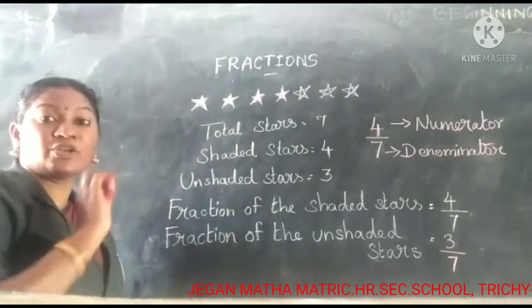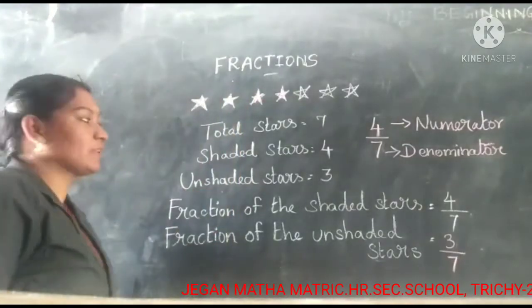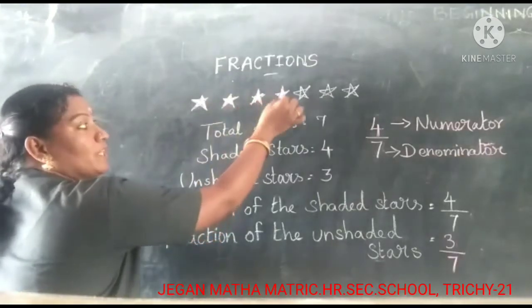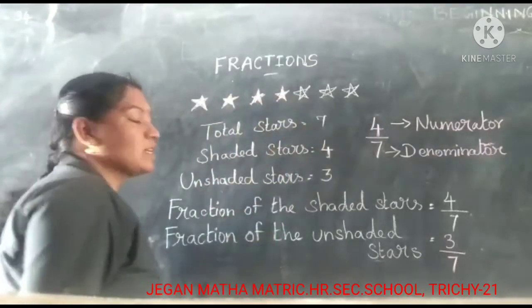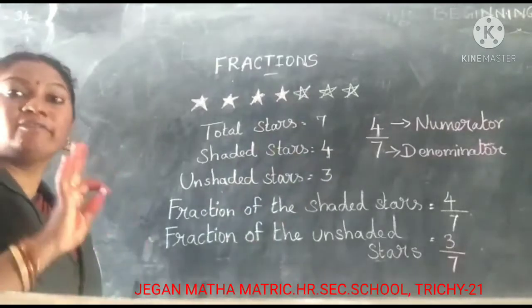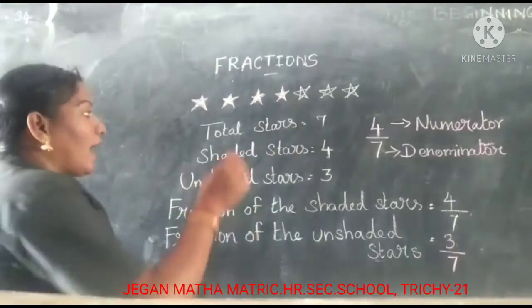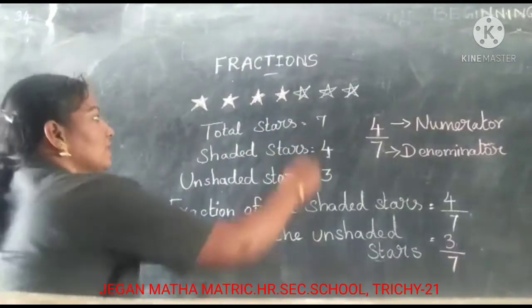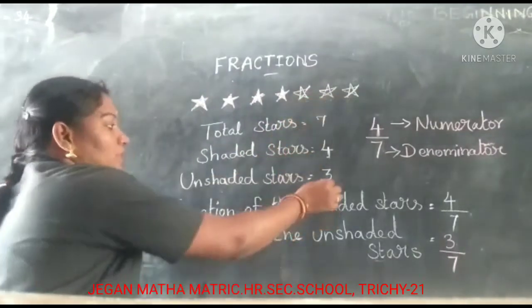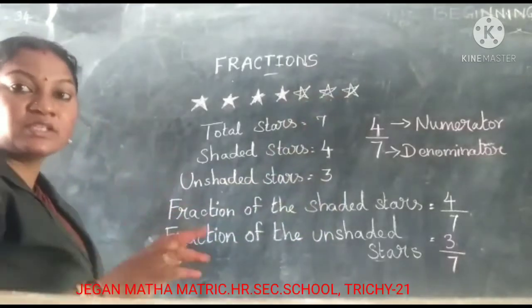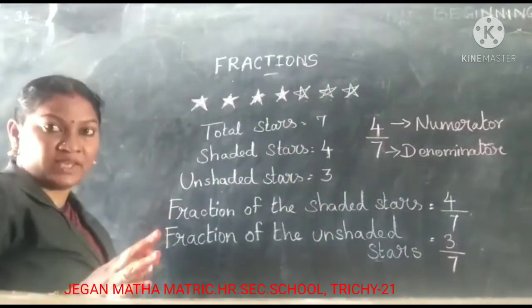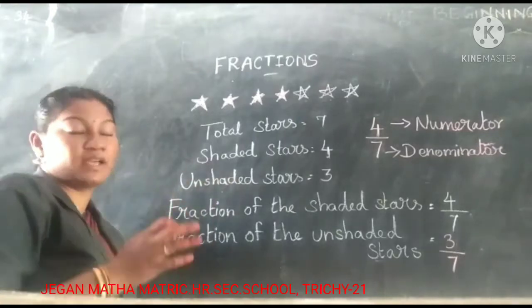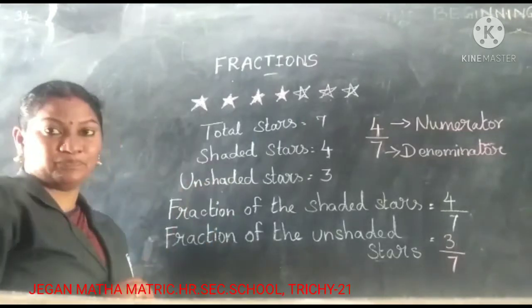Some stars are shadowed. Let's count the shadowed stars: 1, 2, 3, 4. Shadowed stars are 4, and unshadowed stars are 3.